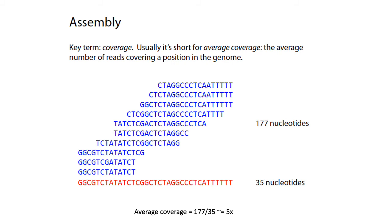There are a few key concepts you'll need to know to understand how assembly works. The first term is coverage — usually people are talking about average coverage, which is the average number of reads that cover a position in the genome. This is easy to compute: if your original genome is on the order of 35 bases and the total number of bases sequenced in blue is 177 bases, then your average coverage is 177 over 35, which is about seven times.